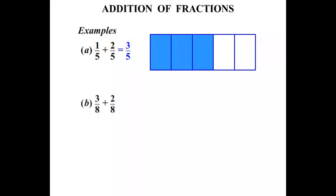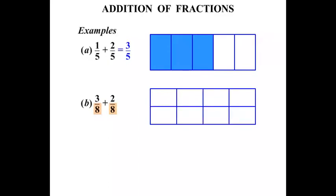The next question: 3/8 plus 2/8. Again let's draw a diagram. We're dealing with 8ths, so let's break up this whole into 8 equal pieces. Now 3/8. Let's shade that in: 1, 2, 3. We're going to be adding 2/8. Let's shade in another 2: 1, 2.